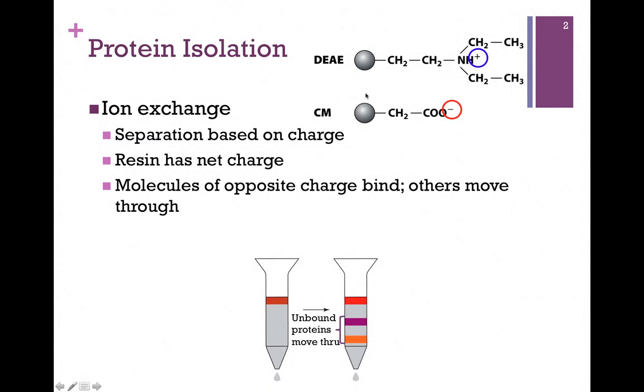At the top of the slide here, we see our bead is represented by the gray sphere, and to these spheres might be attached different groups. At the top, we have diethylaminoethyl (DEAE). As you can see, the attachment of this group gives the resin a net positive charge. In CM, we have carboxymethyl attached to the bead, and in that case we have a net negative charge.